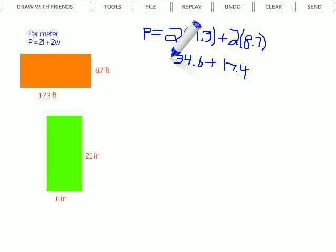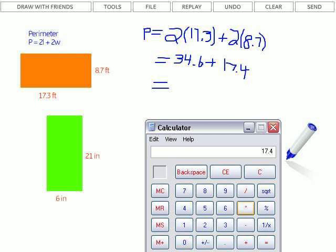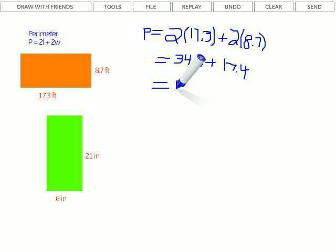We add those together for our answer, which is 34.6 plus 17.4 equals 52. So the perimeter of this rectangle is 52. We look at the units on each of our distances, and it's feet, so our perimeter is 52 feet.